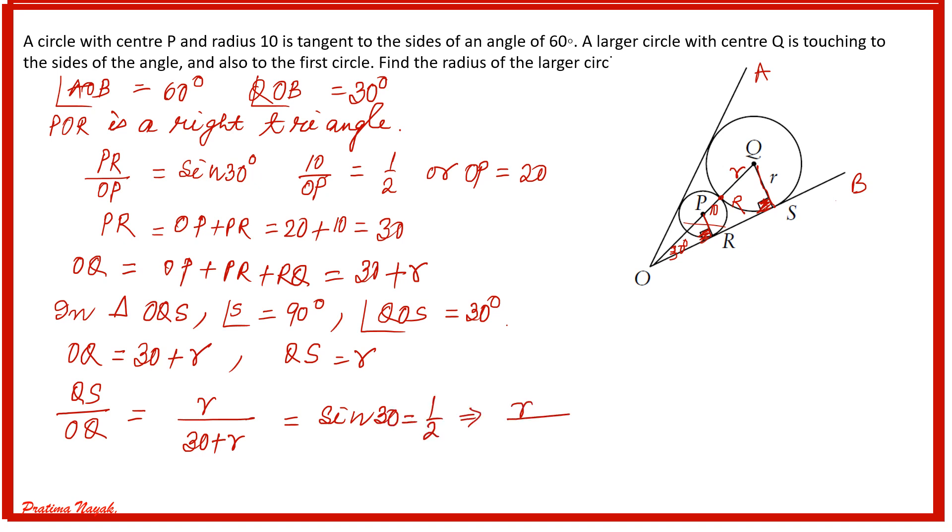Or r over 30 plus r equals half. Twice r equals 30 plus r on cross multiplication. This gives me r equals 30, shifting r to the left side. So r equals 30 units.